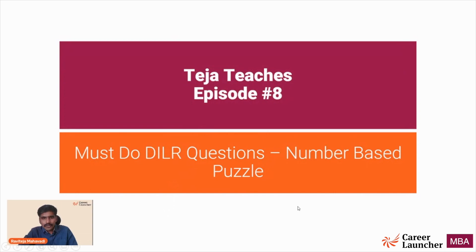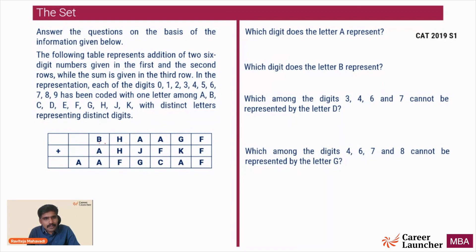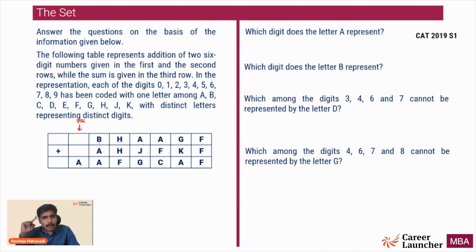So this is the set. Answer the following questions on the basis of the information given below. The following table represents the addition of two six-digit numbers given in the first and second rows, while the sum is given in the third row. So these are two six-digit numbers BHAAGF and AHJFKF. The addition of these two six-digit numbers is giving you a seven-digit number in this case.